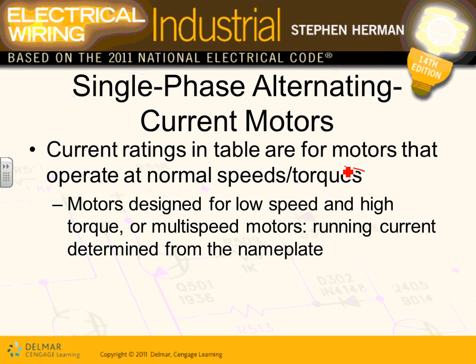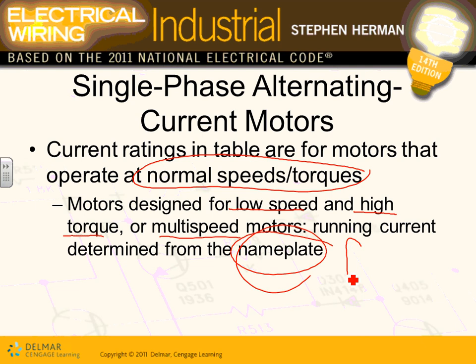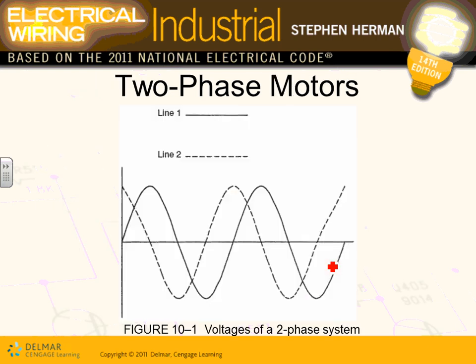All these tables are for normal speed and normal torque motors. If you have a different speed or torque, you use the nameplate. Use the NEC code book for motors running at normal speed and normal torque. For low-speed motors — 1200 RPM or less — or high-torque motors, the nameplate full load current must be used.